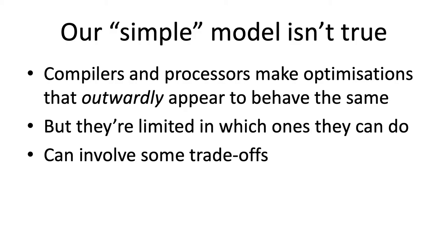So our simple model isn't really true anymore. We had this model of instructions executed in order, mutating data, that nicely matched train station directions and a naive model of how a processor works — but it's just not true. The compiler is changing your code, although it outwardly appears to behave the same.